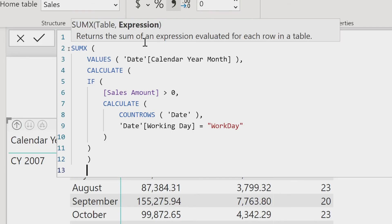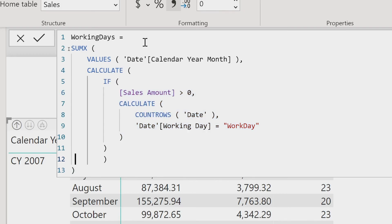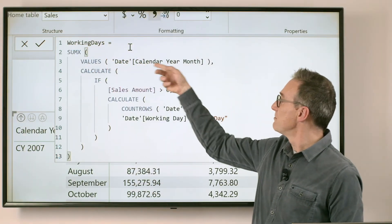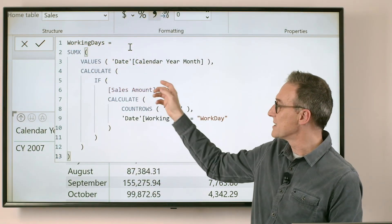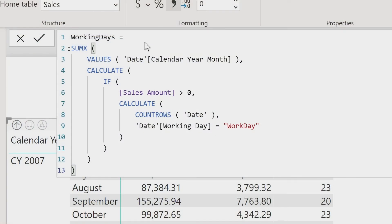I need to format the code the right way. These need to be there. Now it looks much nicer. And by doing that, I do an iteration month by month, and I compute the sales amount and the number of working days only if there are sales month by month.